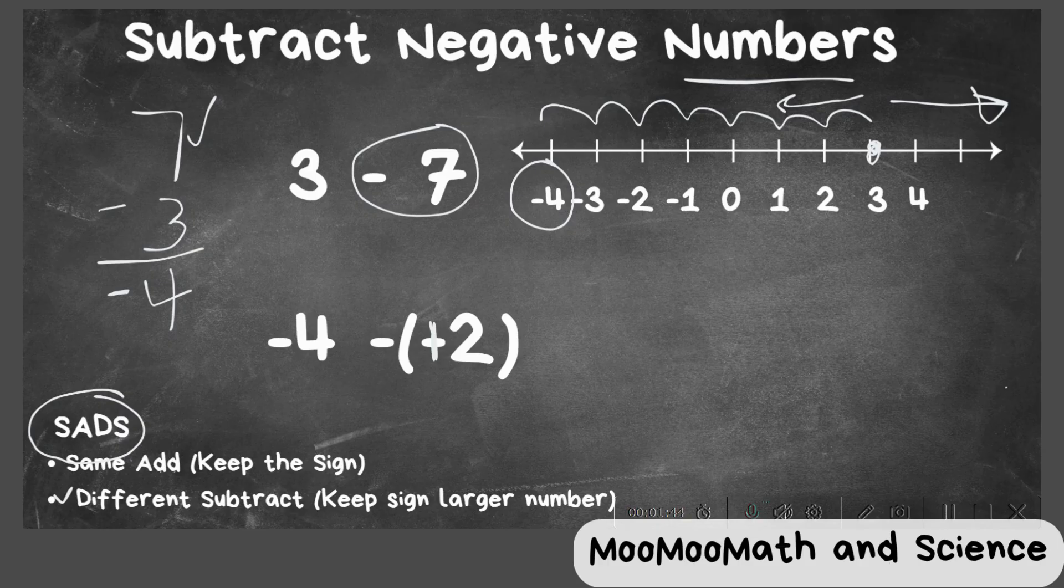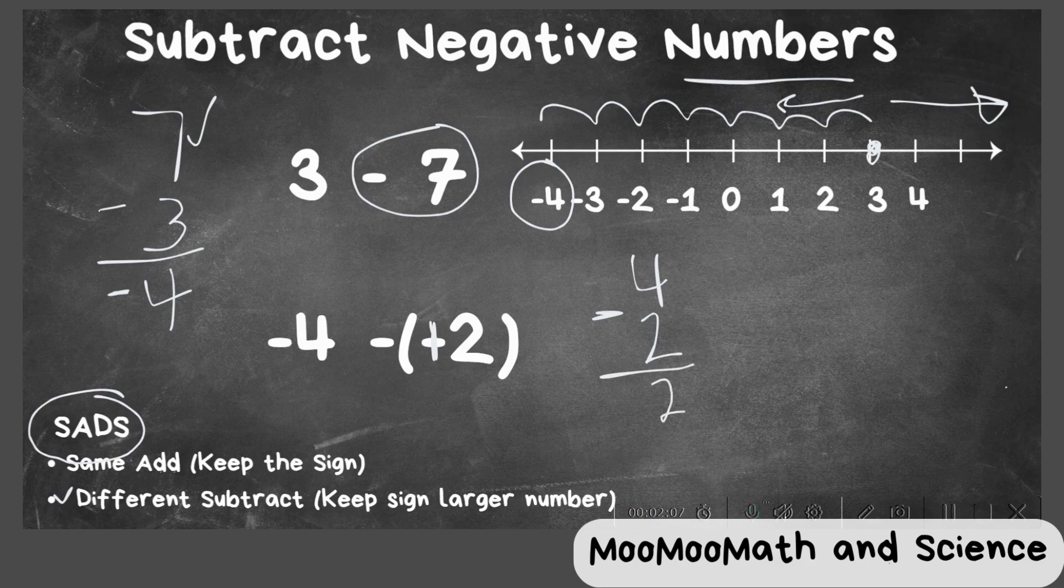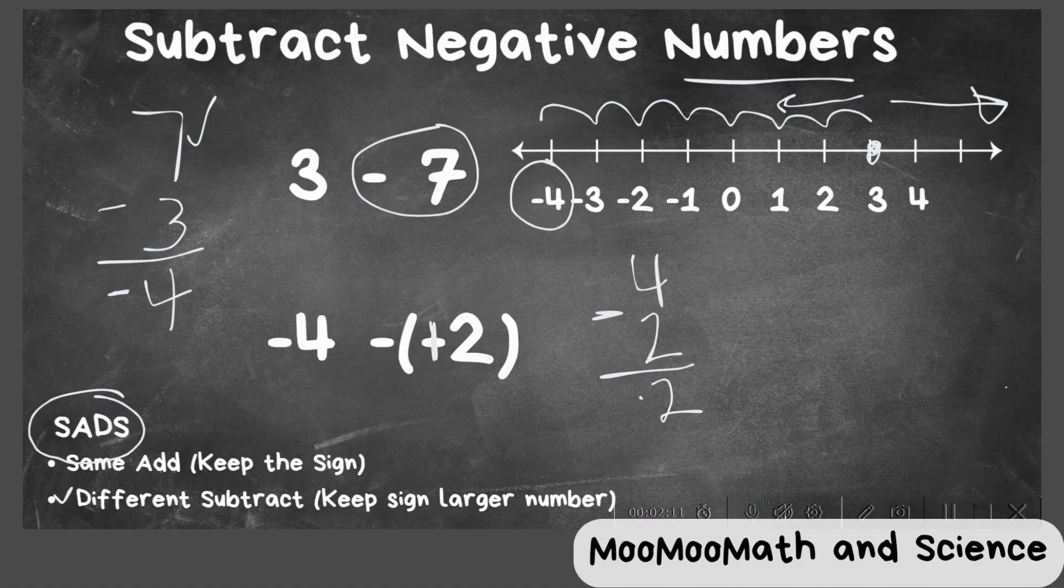So now, let's go ahead and write 4 and 2, because those are the two numbers. I placed the larger one on top. And next, you will notice that you have a negative number and a positive, so we have opposites. So we're going to subtract, so 4 minus 2 is 2. And we're going to take the sign of the larger number, which is negative 4, so it becomes negative 2.